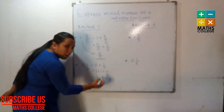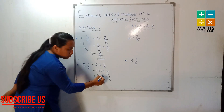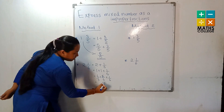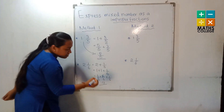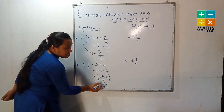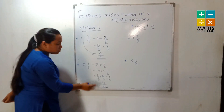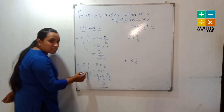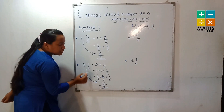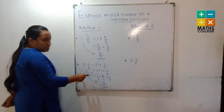Adding three fractions: six plus six equals twelve, twelve plus one equals thirteen. We do not add the denominators. The answer is thirteen upon six. Thirteen upon six is the improper fraction, and two and one upon six is the mixed number. This is one method of converting a mixed number into an improper fraction.